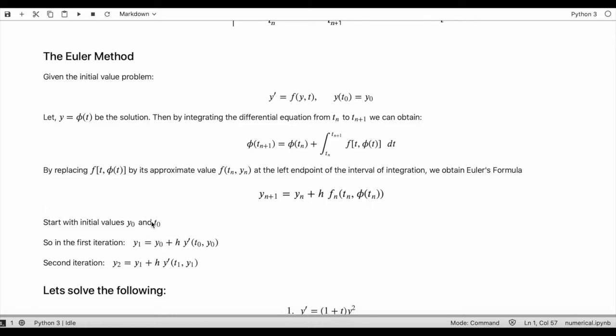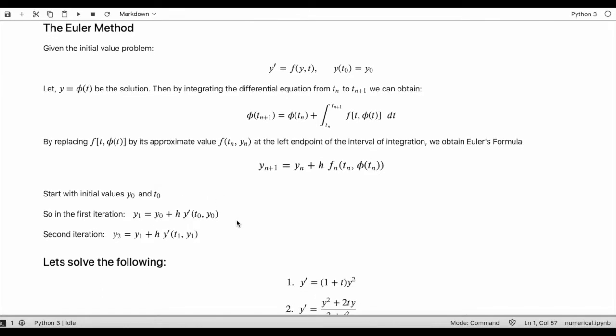For example, if we start with initial values y0 and t0, then in the first iteration we will get y1 equals y0, which is the initial value of y, plus h the step size times the derivative evaluated at t0 and y0.